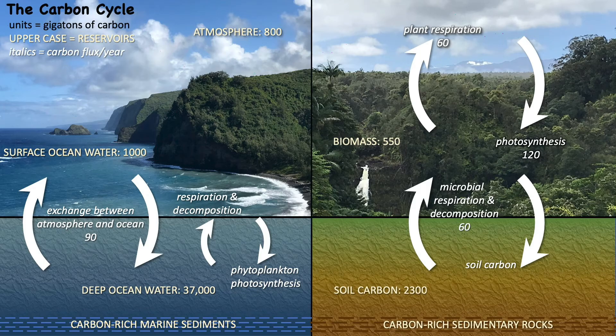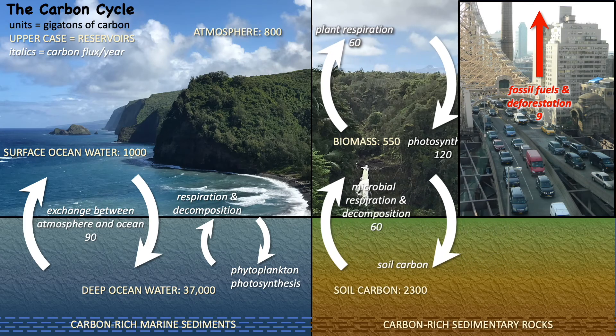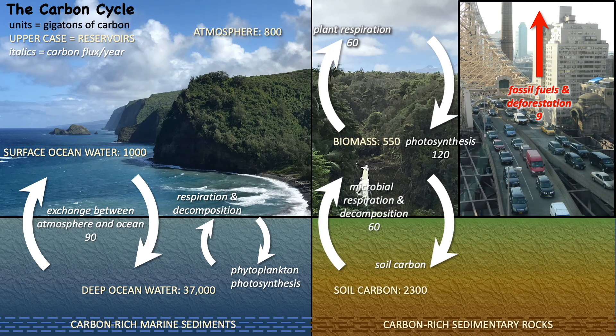These natural cycles run in balance. Photosynthesis removes carbon from the atmosphere, and respiration and decay return exactly the same amount. The input and outputs are equal, and the amount of carbon remains constant in all the reservoirs. When humans get involved, we upset the natural balance. Burning fossil fuels creates a new carbon input to the atmosphere that has no compensating output, so atmospheric carbon accumulates.